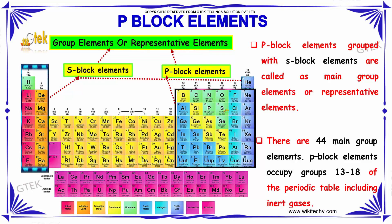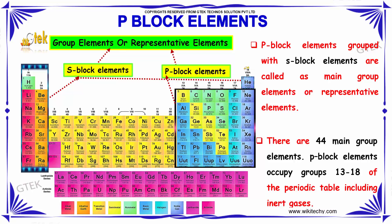There are 44 main group elements. P-block elements occupy groups 13 to 18 of the periodic table, which includes the inert gases.